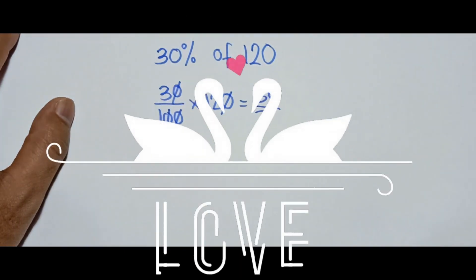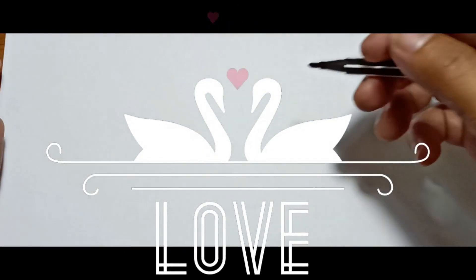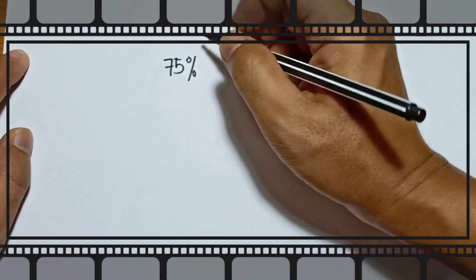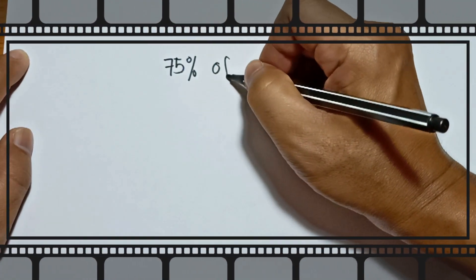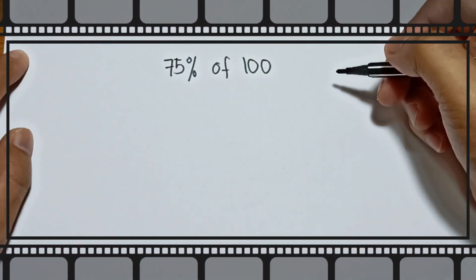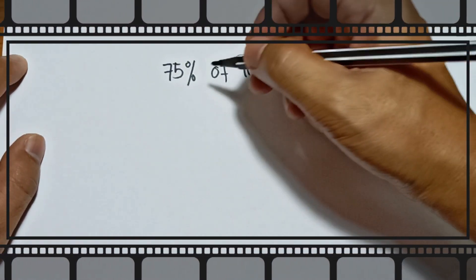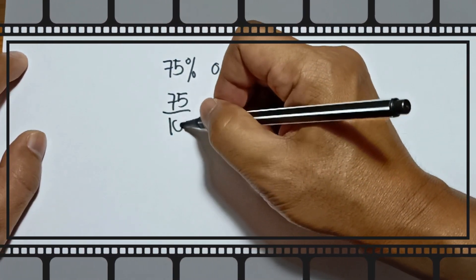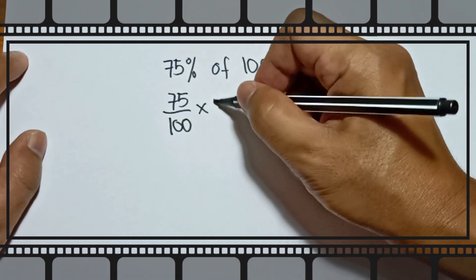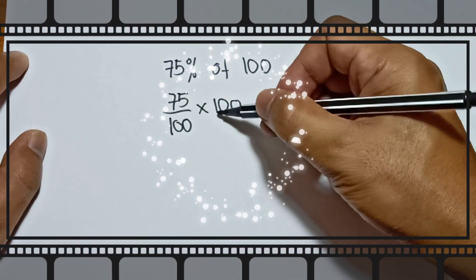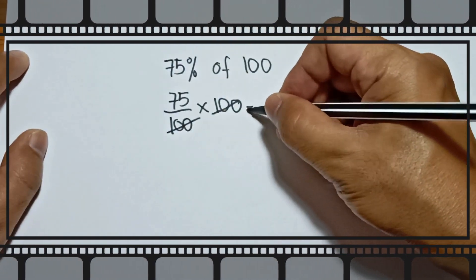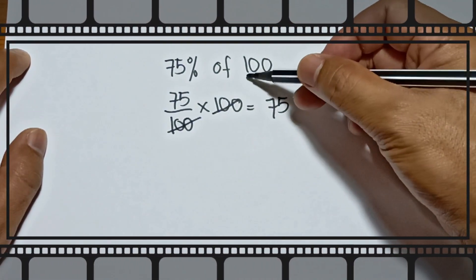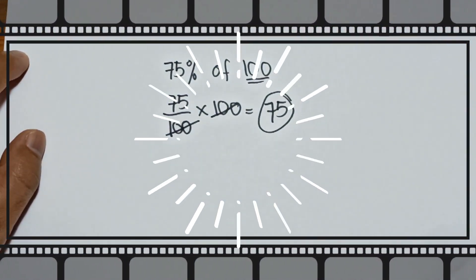Another example: 75 percent of 100. All you have to do is 75 over 100 times 100. You can cancel the 100, so the remaining is 75. Therefore, 75 percent of 100 is equal to 75.